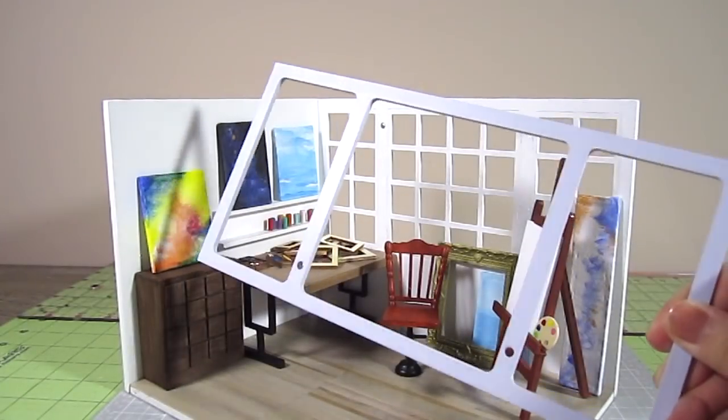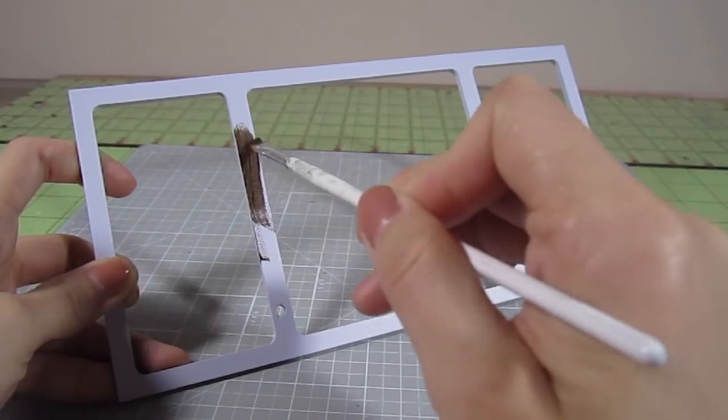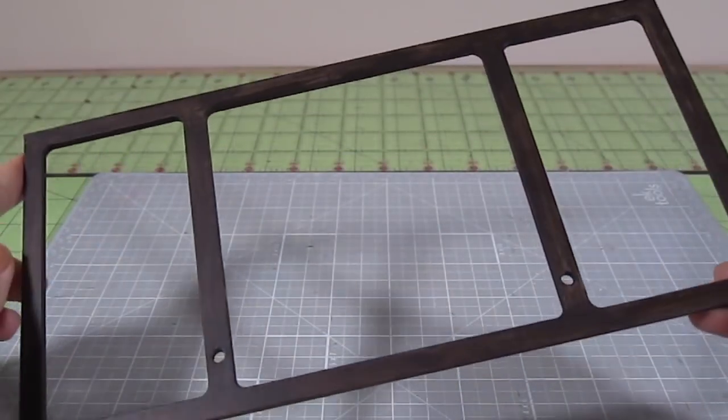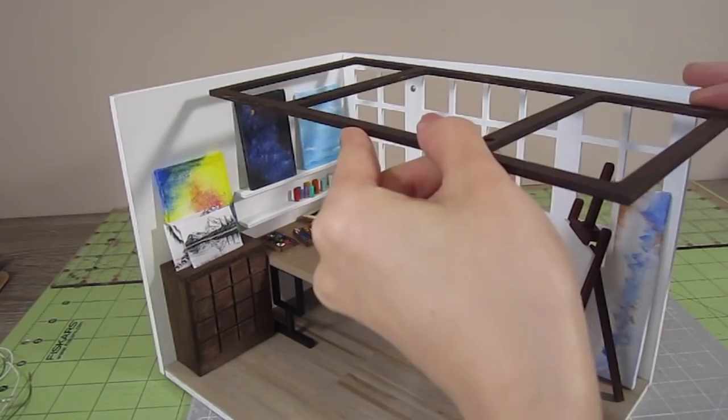Remember this big grey piece from earlier? Let's turn that into the ceiling. First, paint it dark brown. When that's dry, glue it to the top of the room with wood glue.